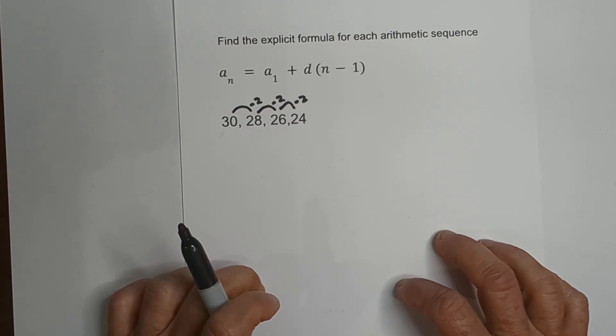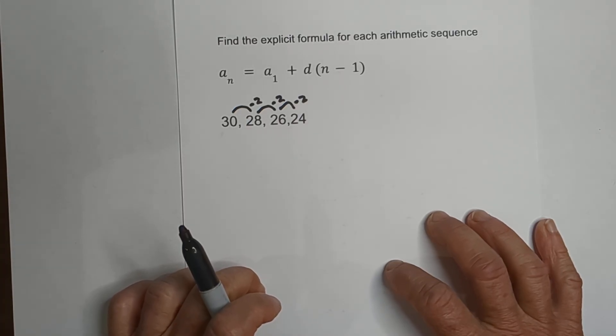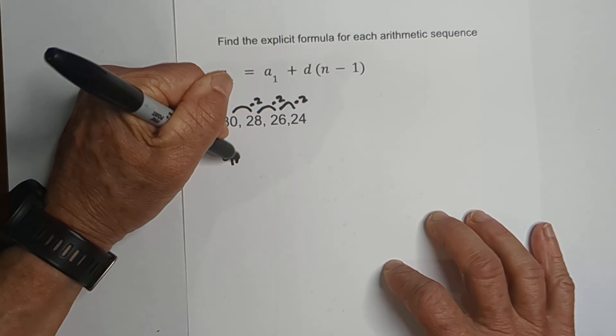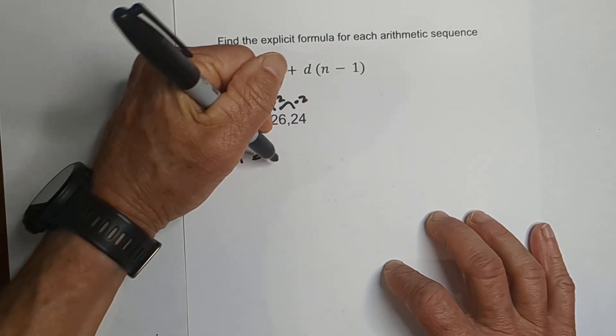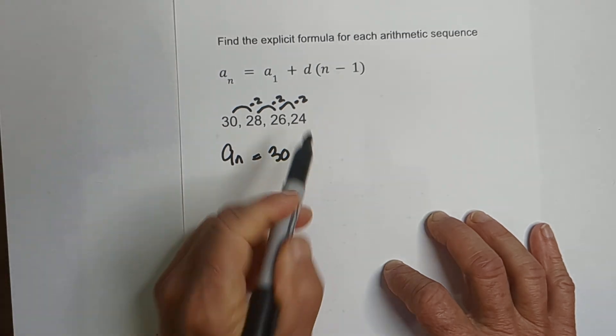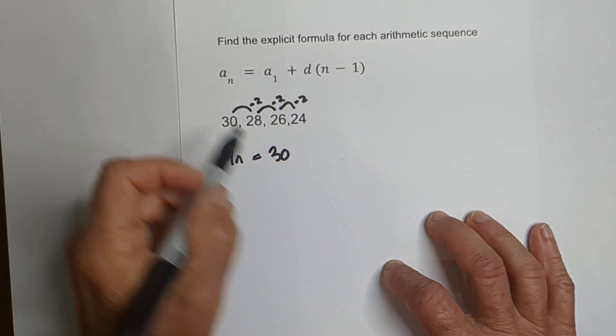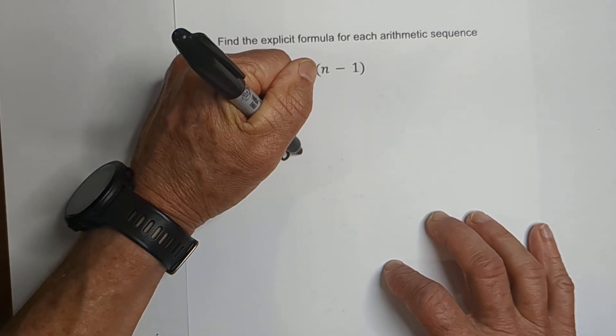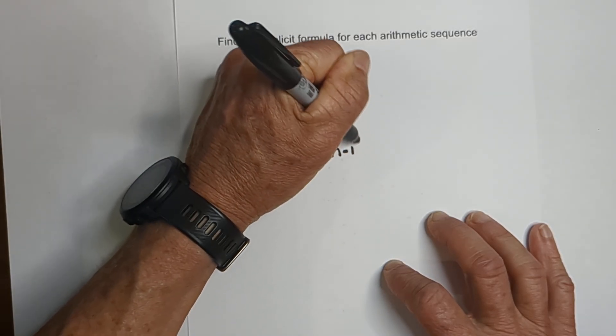So now let's go ahead and work the formula and see what impact that makes. First we have a_n equals a_1. Remember, it's the first term and that's 30. But instead of adding, we're going down, so we have a negative number: negative 2 times (n minus 1).